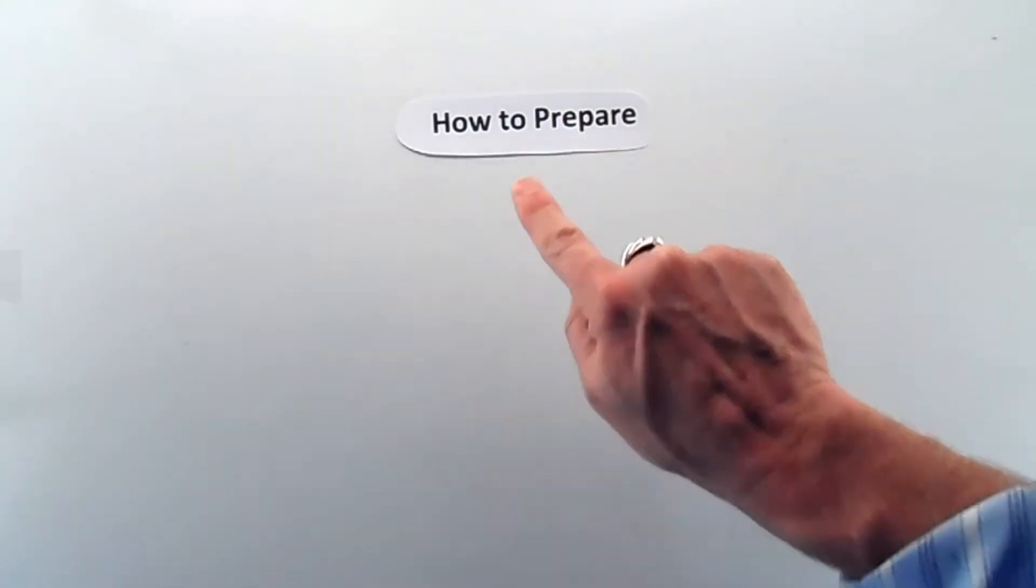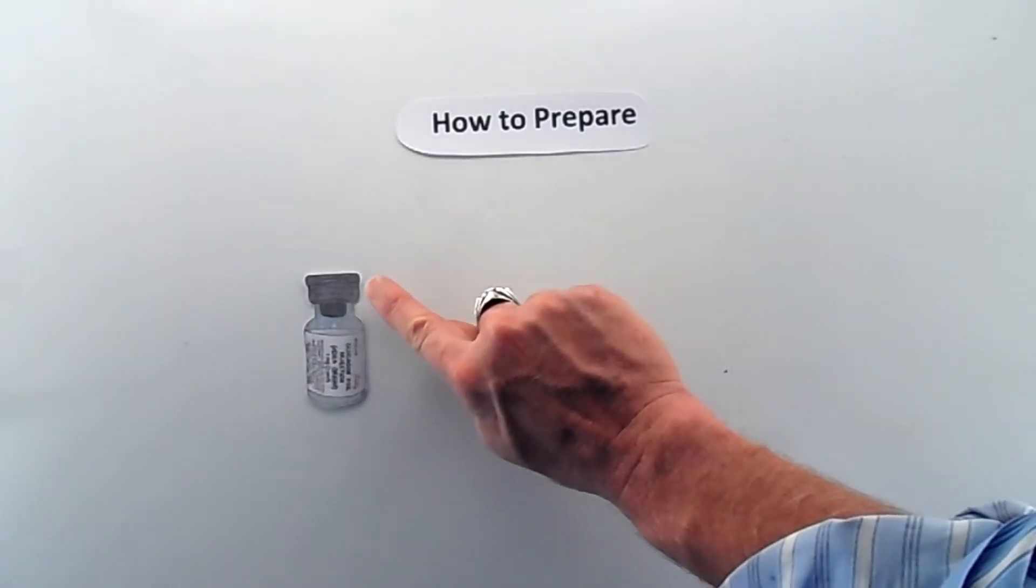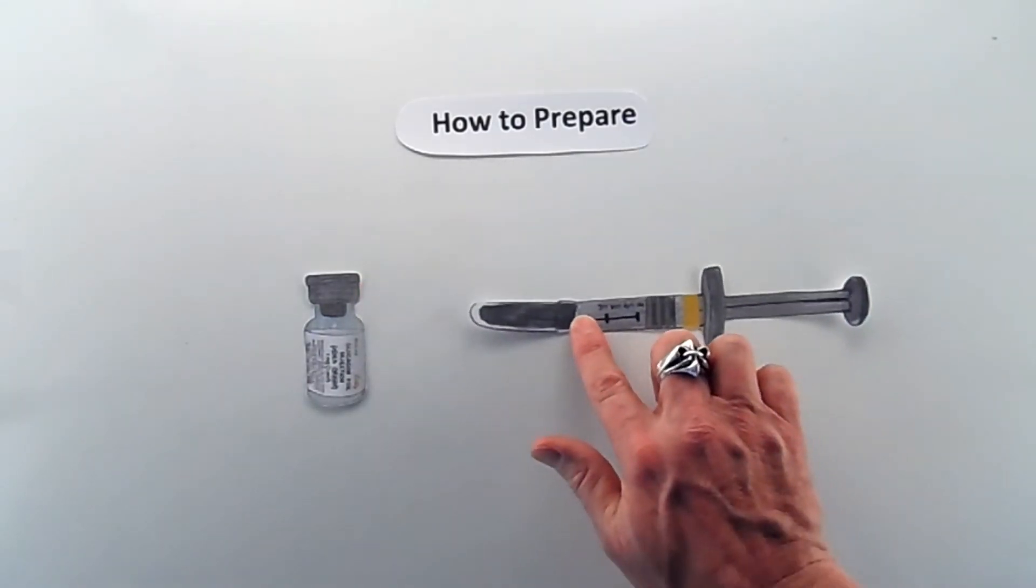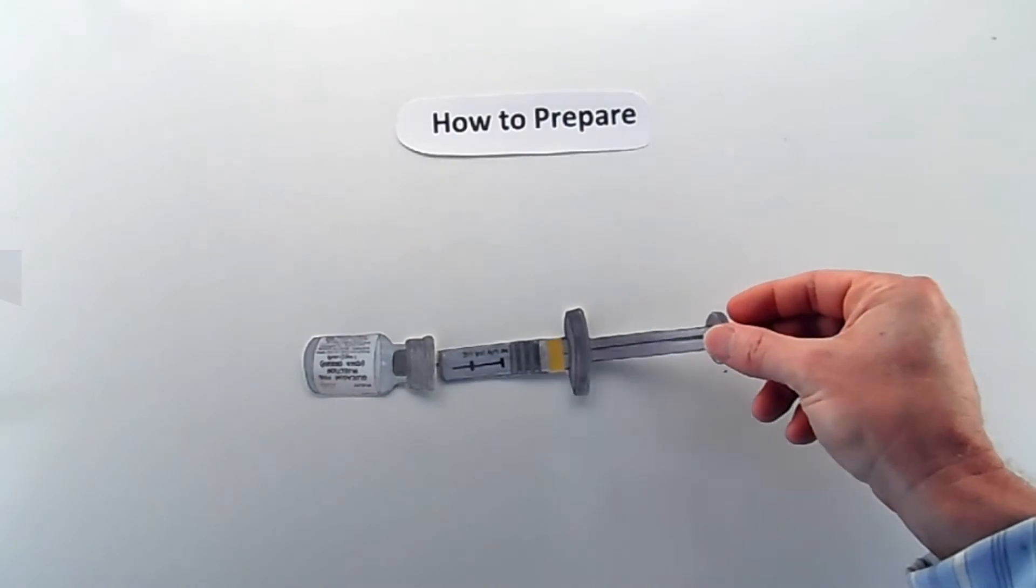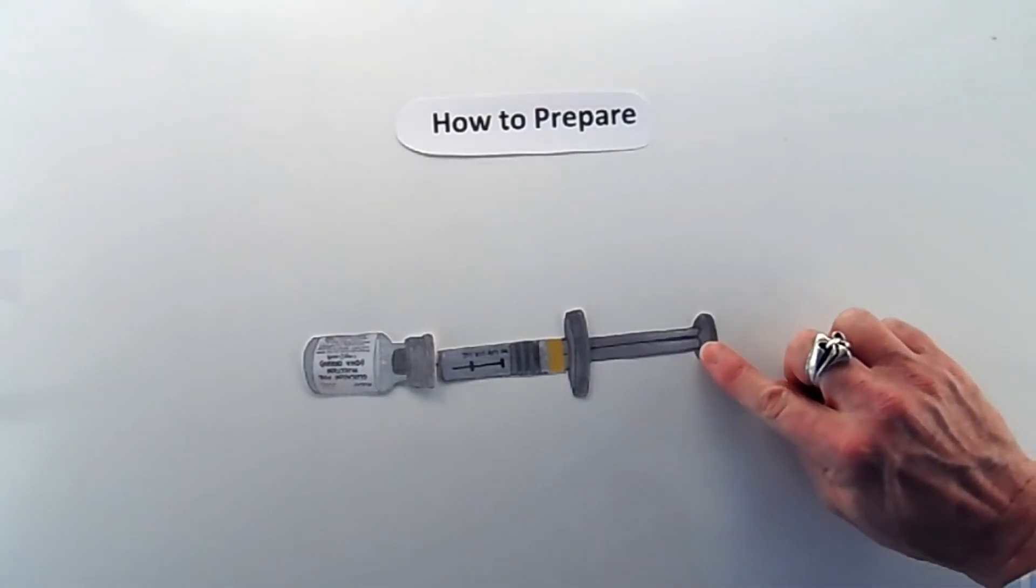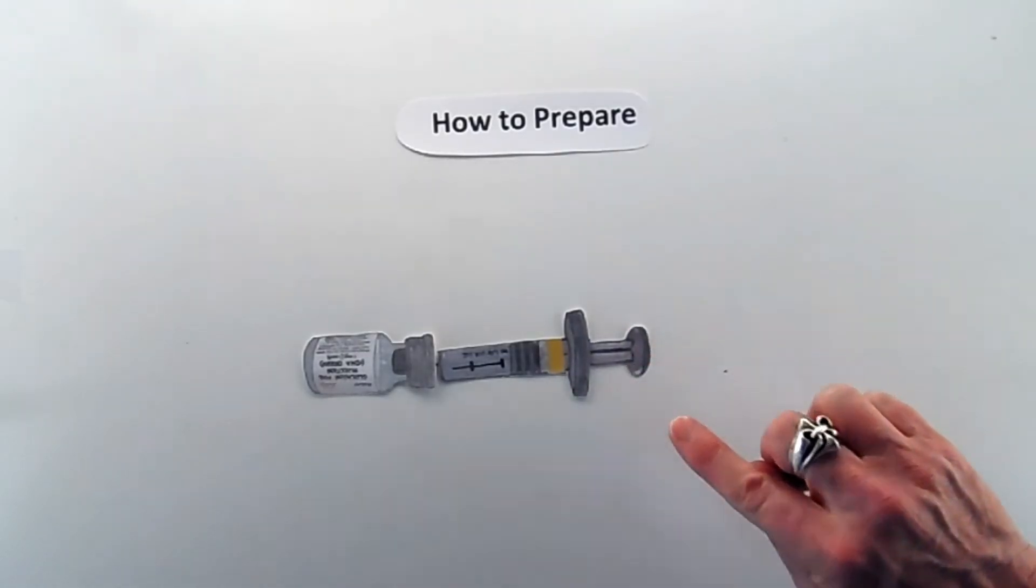So now you need to prepare it. First, you'll need to remove the seal from the vial containing the powder. Next, you'll remove the needle cover from the syringe. Then you'll insert the needle into the vial and inject all the liquid from the syringe, essentially mixing the liquid with the powder.